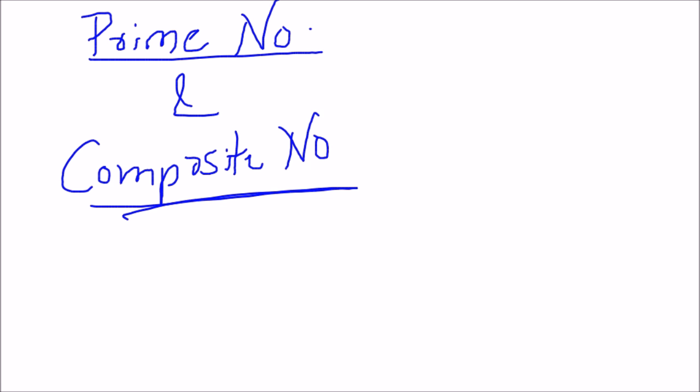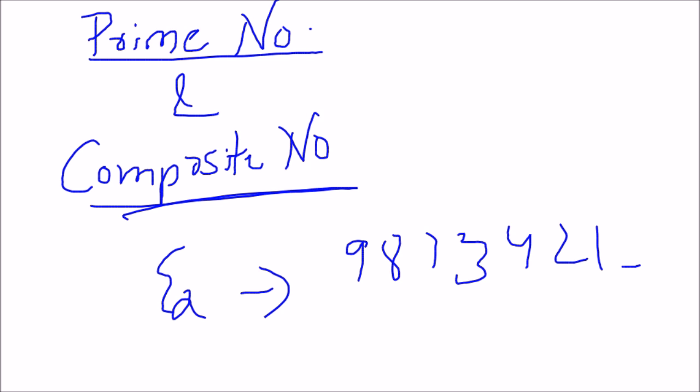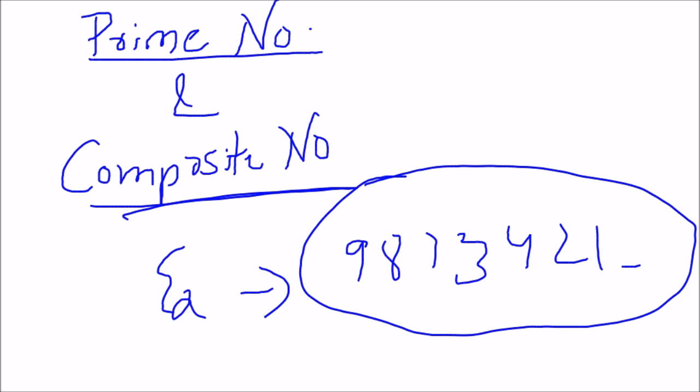I've also made a separate video on prime numbers and composite numbers, which briefly explains what a prime number is, what a composite number is, whether 1 is prime or composite, and covers examples. It also explains a trick to check whether any large number is prime within seconds. The link is visible on your screen or in the description below.